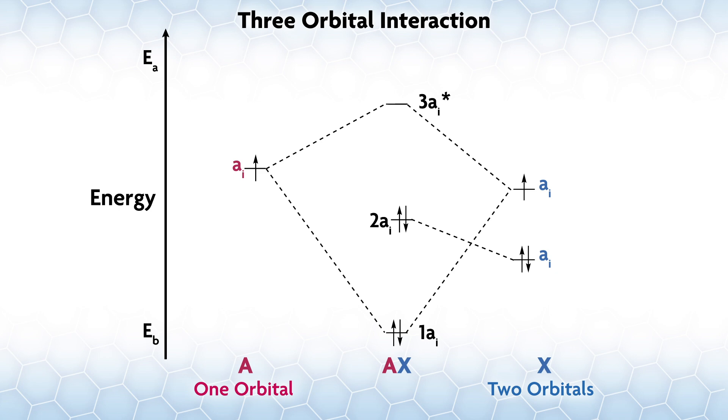In the end, however, regardless of the mixing, you have one bonding, one antibonding, and one non-bonding orbital.